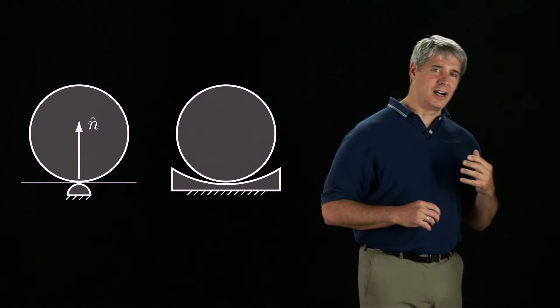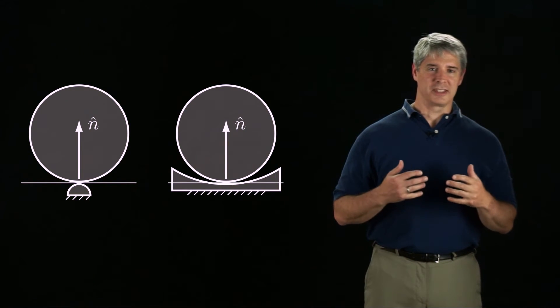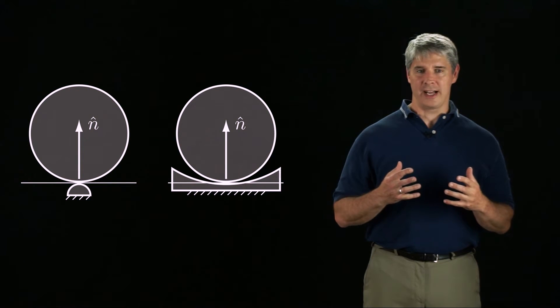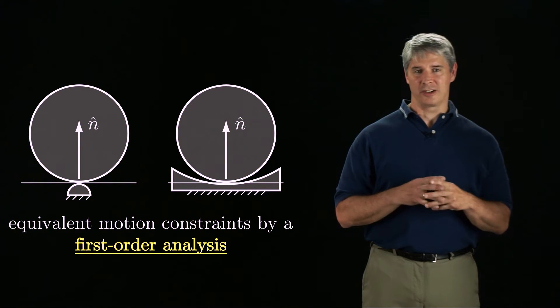The contact normal could be defined either upward or downward. Now imagine the disk is in contact with a constraint with a different curvature. The contact normal is the same relative to the disk, and by our first-order analysis, which ignores curvature, the constraints on the disk's motion are identical.